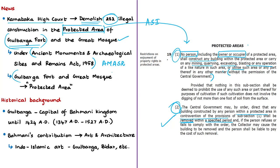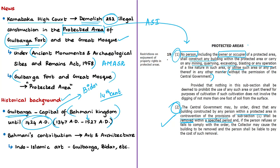Now let us see some interesting facts about the Gulbarga fort and the great mosque in the fort. According to historians, in the early 14th century the Deccan was occupied by Muhammad Tughlaq, who brought the entire region under the rule of the Delhi Sultanate. Later in the 14th century, Gulbarga became the capital of the Bahmani Kingdom, which existed from 1347 to 1527. It was the capital until 1424, after which the capital was transferred to Bidar during the rule of Ahmed Shah I.